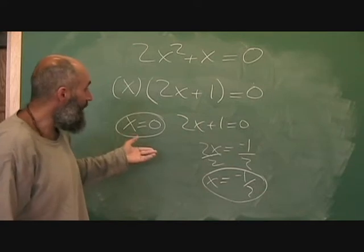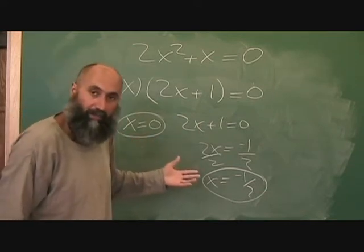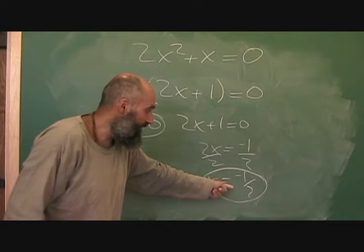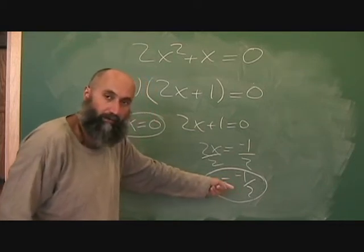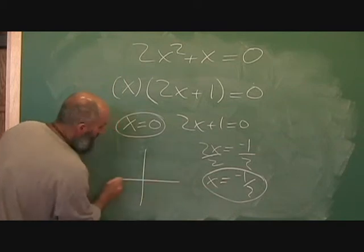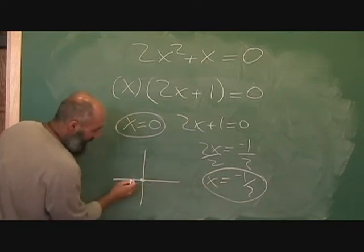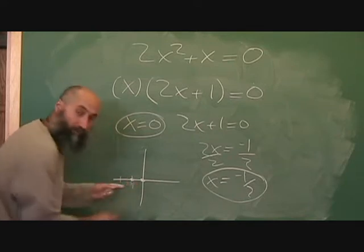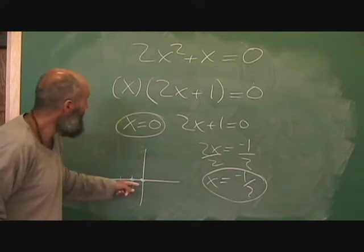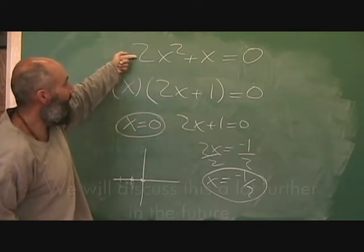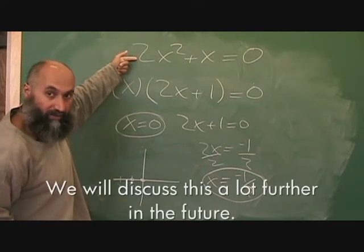For those who have already talked about quadratic equations, x equals zero and x equals negative one over two is where the parabola crosses the x-axis. So you would go x equals zero and x equals negative a half — that's where the parabola crosses the x-axis.